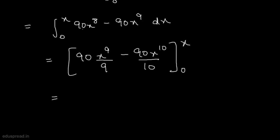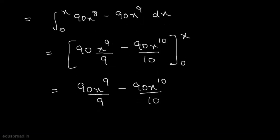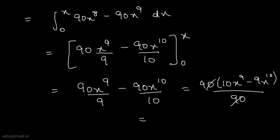When we substitute the limits 0 and x, we get 90x raised to the power 9 divided by 9 minus 90x raised to the power 10 divided by 10. Simplifying, this equals 90x raised to the power 9 minus 9x raised to the power 10, all divided by 90, which gives us 10x raised to the power 9 minus 9x raised to the power 10.